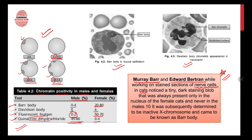An important historical fact: Murray Barr and Edward Bertram, while studying stained sections of nerve cells in cats, noticed a tiny dark-staining blob that was always present in the nucleus of female cats and never in males. This was subsequently determined to be an inactive X chromosome and was later called the Bar body — named after Murray Barr.